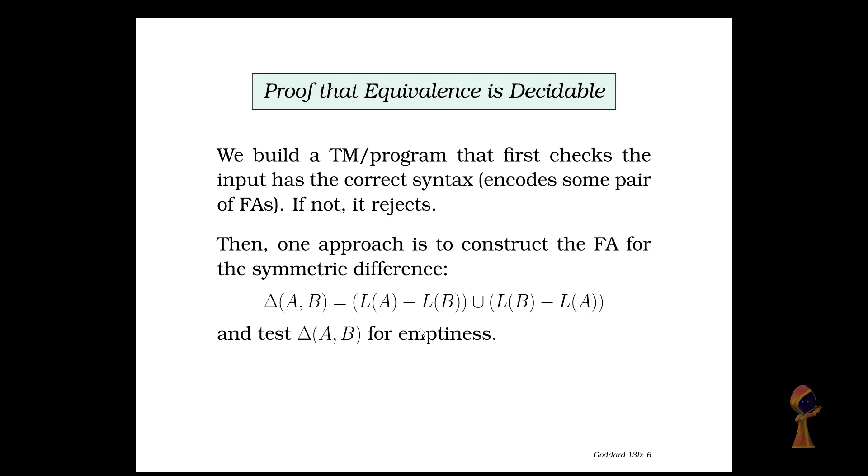In terms of proof, how do we do this? We can do a proof by construction. We develop or build a Turing machine which first checks what is the input, is the input in the correct syntax. If it's not in the correct syntax it's going to reject it. Otherwise it will move to the main task. If you notice this is very similar to how we develop algorithms.